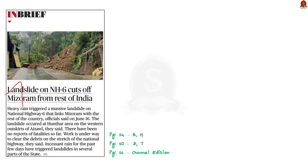Take a look at this news article. Heavy rainfall in Mizoram caused a significant landslide on National Highway 6, which connects the state with the rest of the country. The landslide occurred in the Huntar area near Ice Wall. Very fortunately no fatalities have been reported, and efforts are underway to clean the debris and restore the affected stretches. Additionally, continuous rain has resulted in multiple landslides across various parts of the state. In this context, let us understand a few facts about landslides.